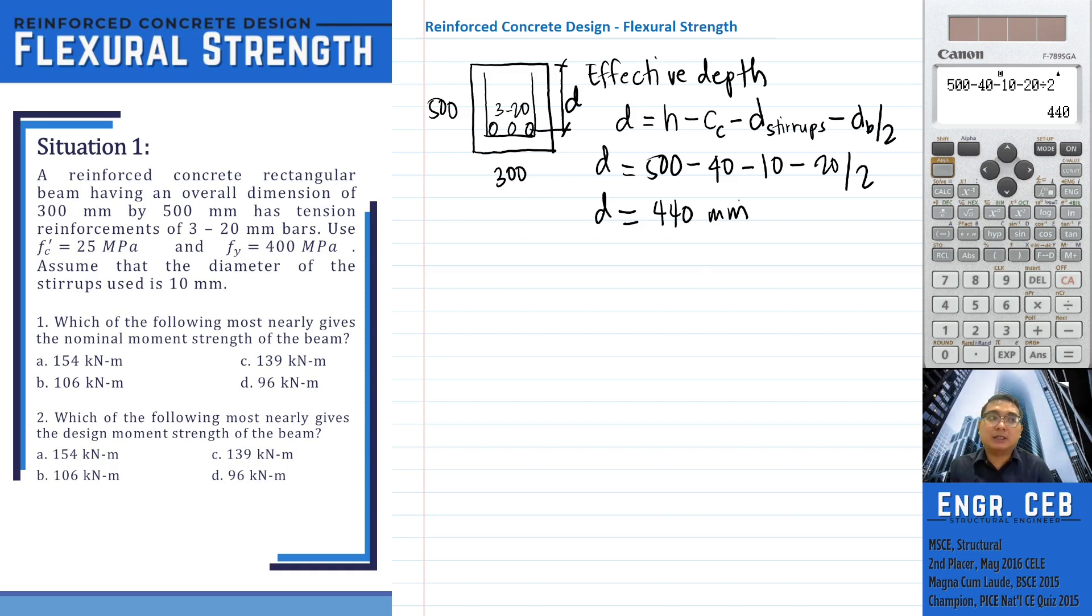In determining the nominal moment strength, take note that the nominal moment strength of a reinforced concrete beam comes from the tension compression couple made by the concrete and steel. This is the compression block of the beam, and this is the steel reinforcement. This is the compressive force developed on the compression side, and this is the tensile force developed on the steel reinforcement. The total compressive force is C, and the total tensile force is T. To satisfy equilibrium, the compressive force should be equal to the tensile force, so C equals T.